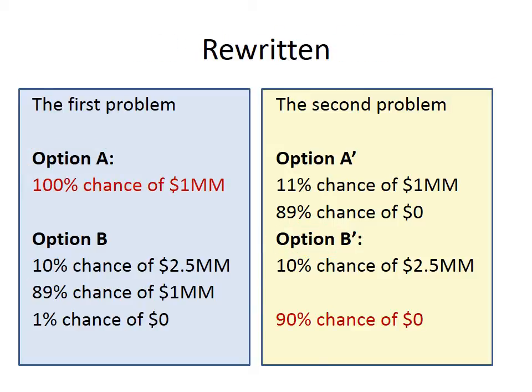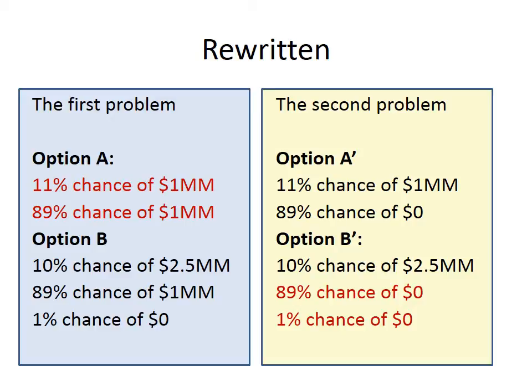I'm going to start rewriting these two problems, focusing on the lines highlighted in red on both sides. Option A in the blue box is a 100% chance of $1 million. I'm going to break that down into an 11% chance of $1 million plus an 89% chance of the same $1 million — functionally the same, just broken into two separate outcomes.